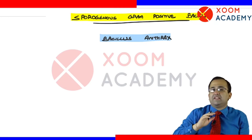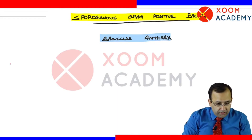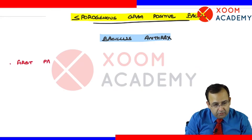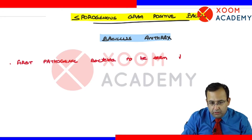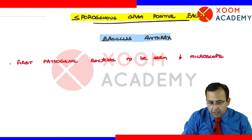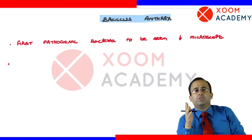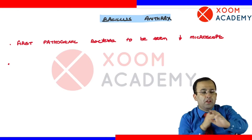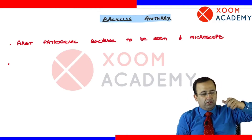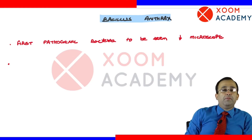Let's start with Bacillus anthracis. Anthrax was the first pathogenic bacteria to be seen under the microscope. Anthrax is extremely famous — when I had joined my MBBS during 2004-2005, anthrax was very much feared with respect to bioterrorism. Around 2009-10 in the US, letters were being sent with anthrax spores, so it was the first pathogenic bacteria — anthrax is extremely famous.